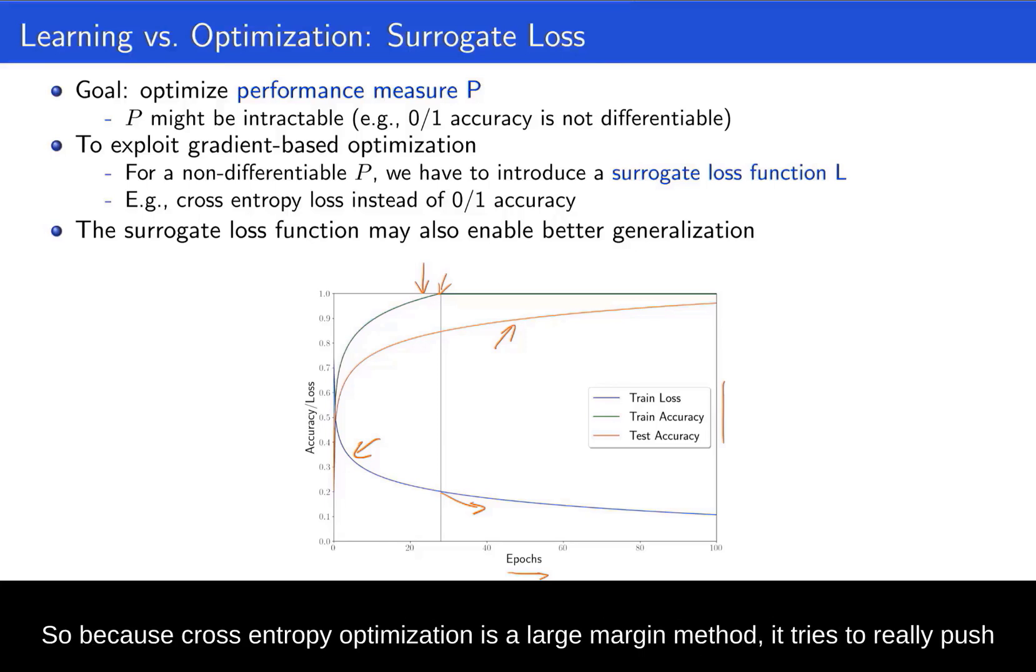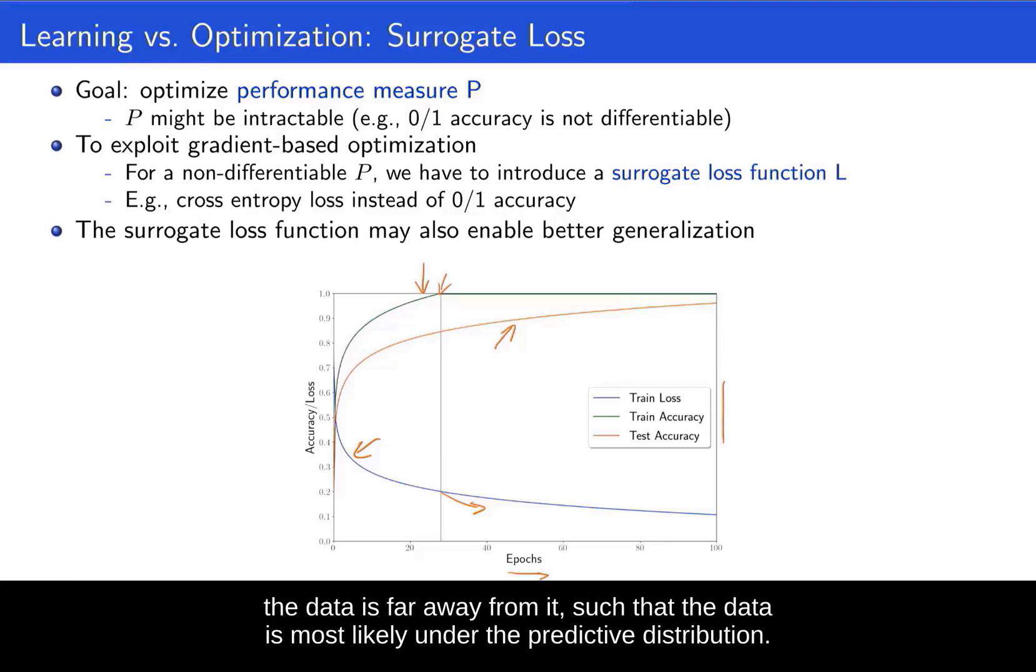But we see that, actually, from this point onwards, we still reduce the cross-entropy error. And that actually translates to improvements in the test accuracy. So because cross-entropy optimization is a large margin method, it tries to really push the data away from the decision boundary, such that the data is far away from it.